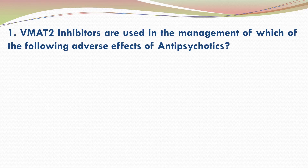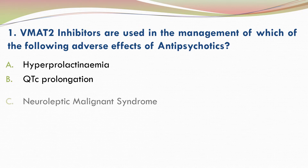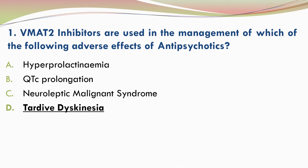Question 1: VMAT2 inhibitors are used in the management of which of the following adverse effects of antipsychotics? There are four options. Please go through the options and make your selection. You can pause the video while you decide your answer. The correct answer is D, tardive dyskinesia.